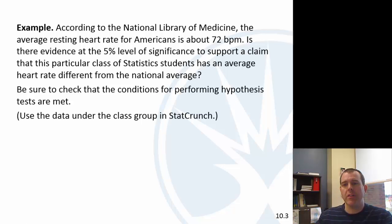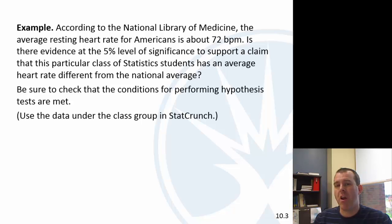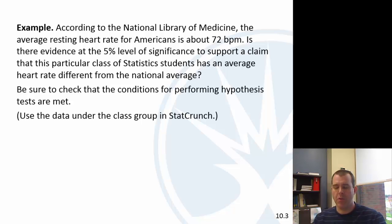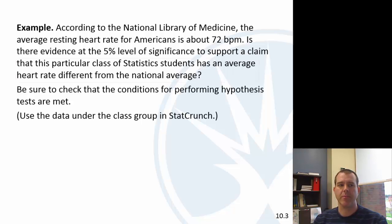According to the National Library of Medicine, the average resting heart rate for Americans is about 72 beats per minute. So our question is: is there enough evidence at the 5% level of significance to support a claim that this particular class has an average heart rate different from the national average? We'll check those conditions, see if they're met, and then do the hypothesis test.